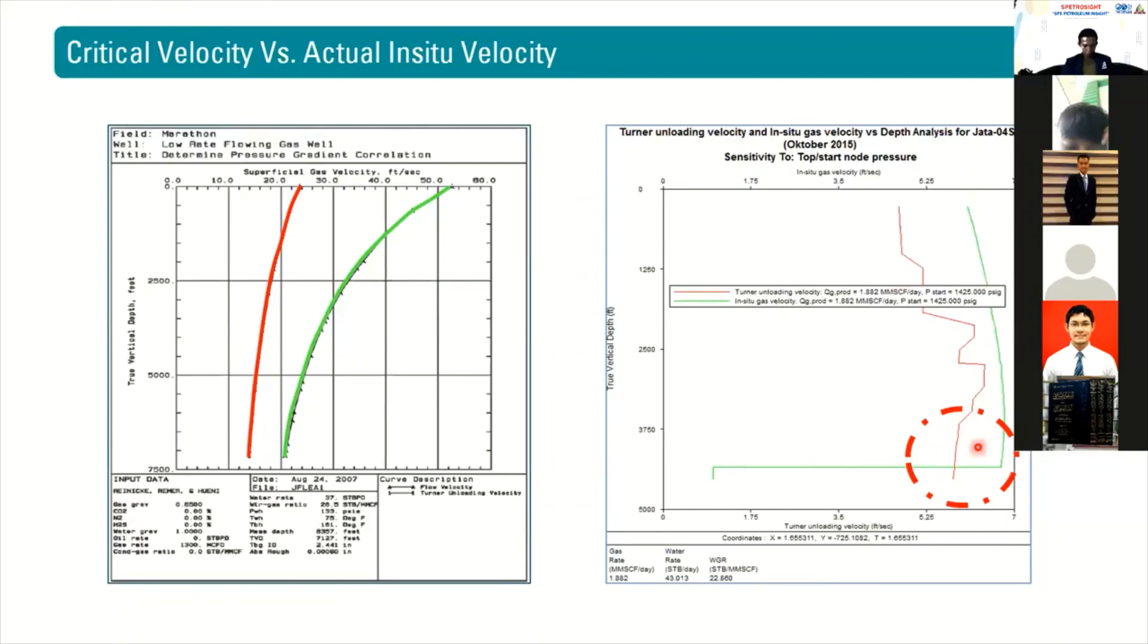Below the packer, we will see casing or annulus, not tubing. We will see a wider area, and in that case, the in-situ flow rate is below the required critical rate and we will have liquid loading on the bottom. On the upper side we are healthy, but on the bottom our liquids load up. So that's the analysis for critical flow rate.